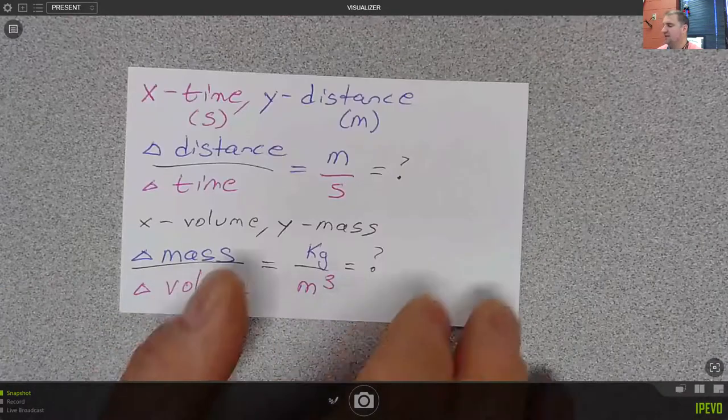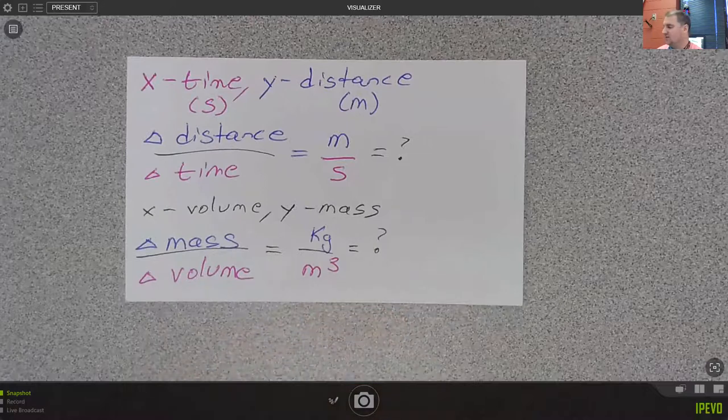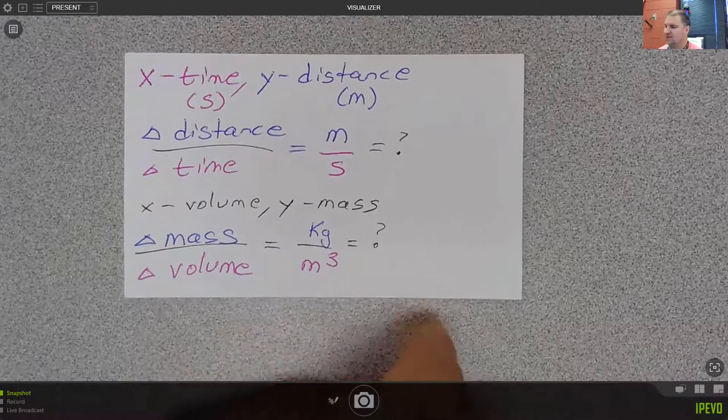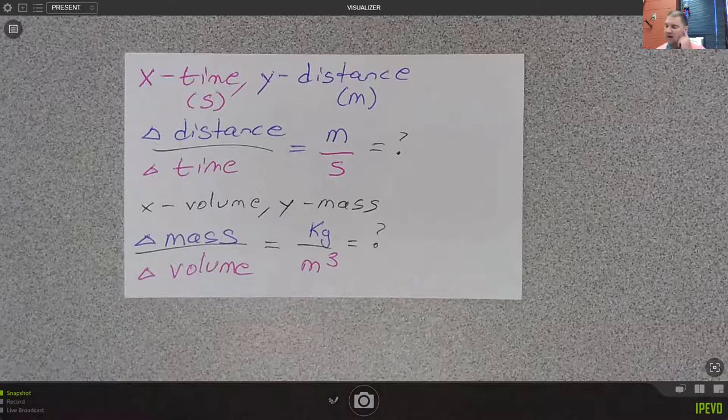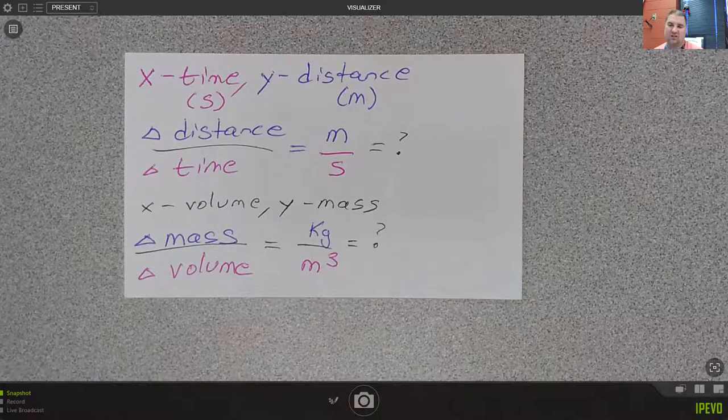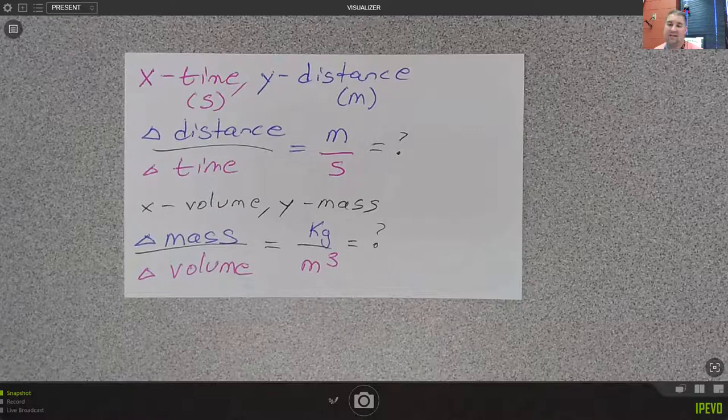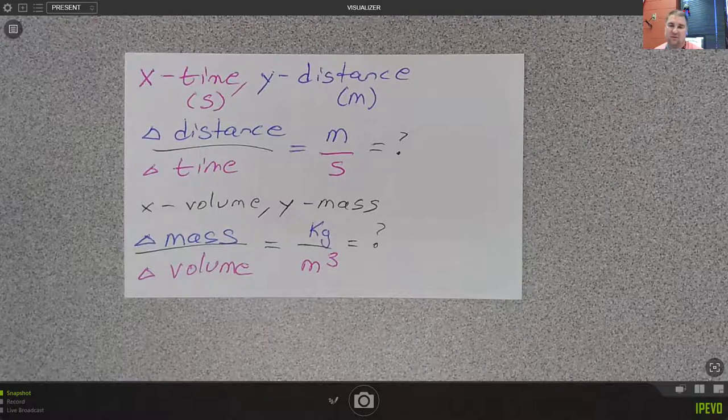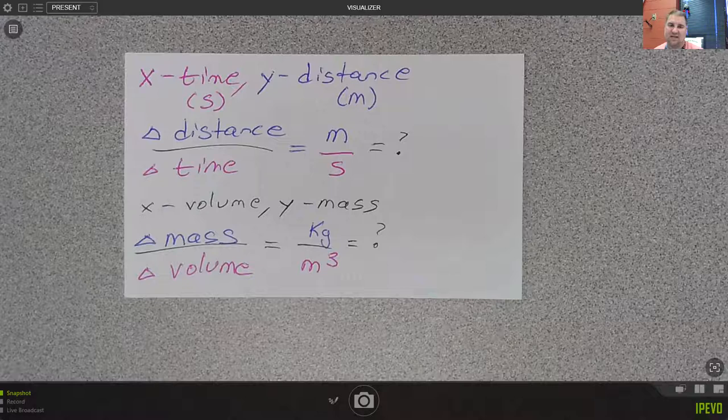And I mentioned that you could do this with different units and you could plot different things on graphs. And so this distance over time, I want you to look at this distance over time and think about change in distance over time. And in SI units, distance would be meters and time would be seconds, okay?